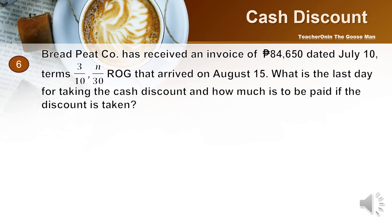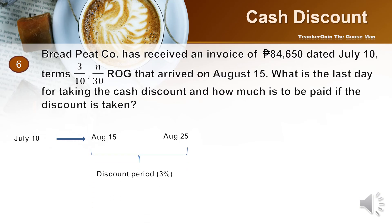Let's have another example. Breadpid Company has received an invoice of 84,650 pesos, dated July 10, with terms of 3/10 N/30 ROG, and the goods arrived on August 15. What is the last day for taking the cash discount, and how much is to be paid if the discount is taken? The invoice is July 10; however, you received the item on August 15. Since this is ROG, count 10 days after August 15 — that brings us to August 25, the last day to avail the 3% cash discount.